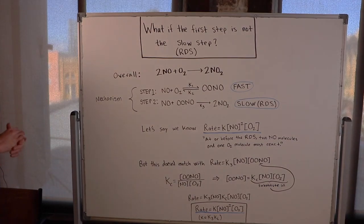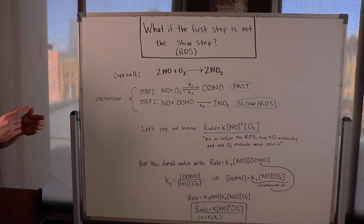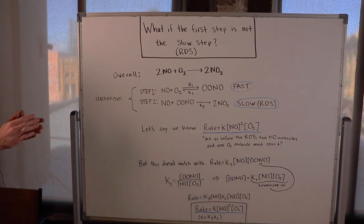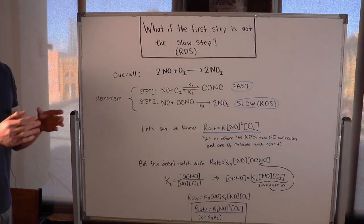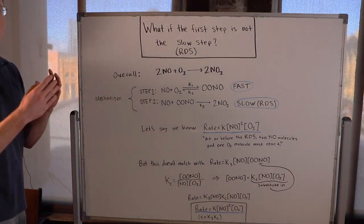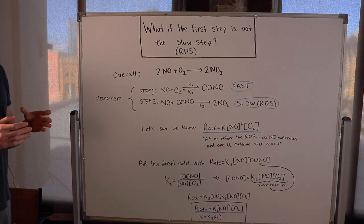So in my chemical mechanisms and rate determining step video, we looked at a lot of mechanisms where the first step was the slow step or the rate determining step. But what if the first step is not the rate determining step? What if it's not the slow step? What if it comes after the first step? Let's look at that here.